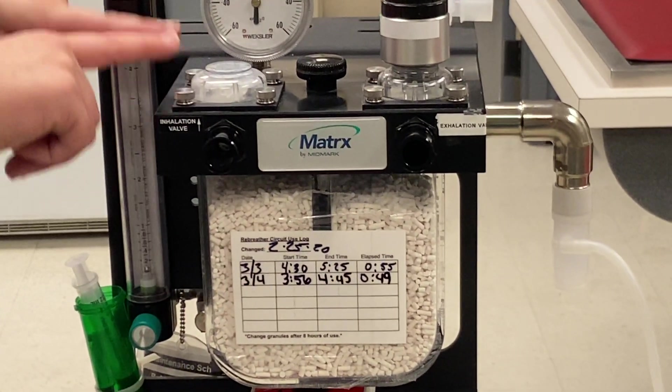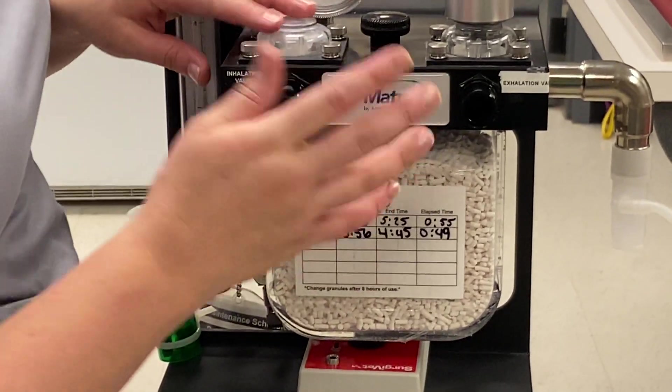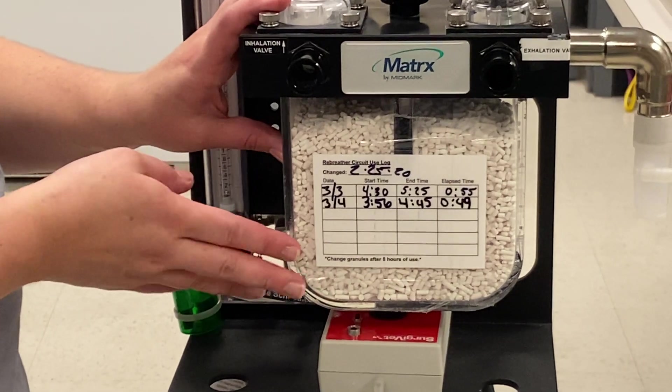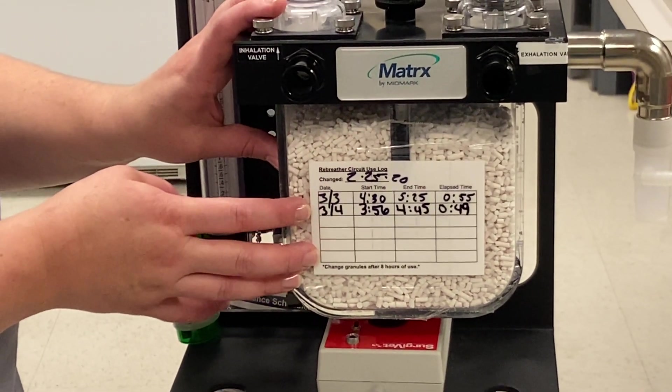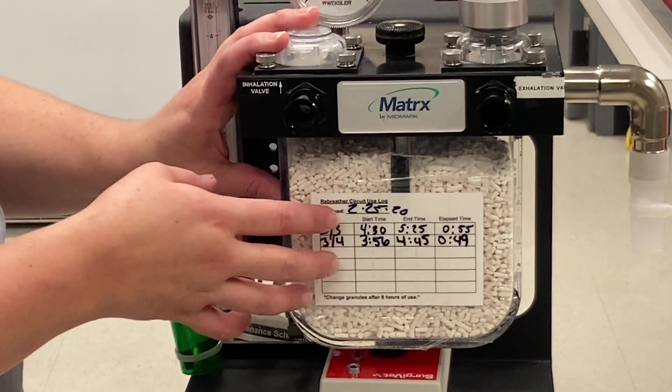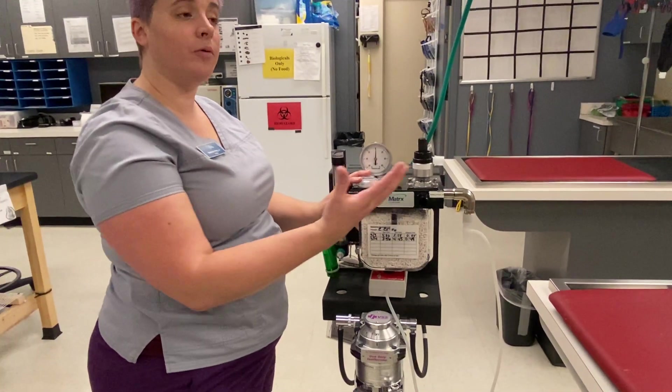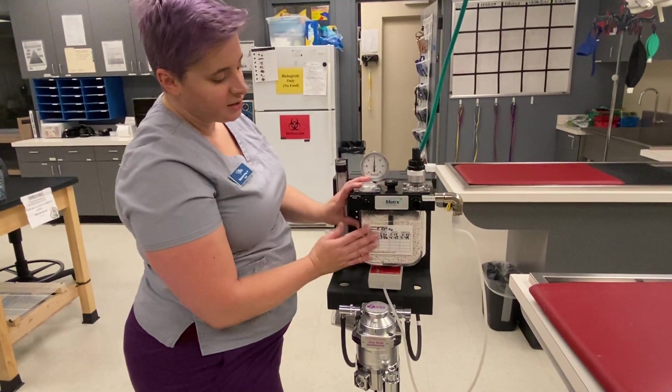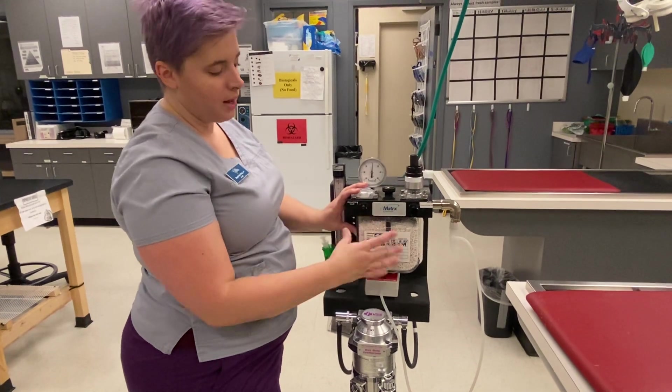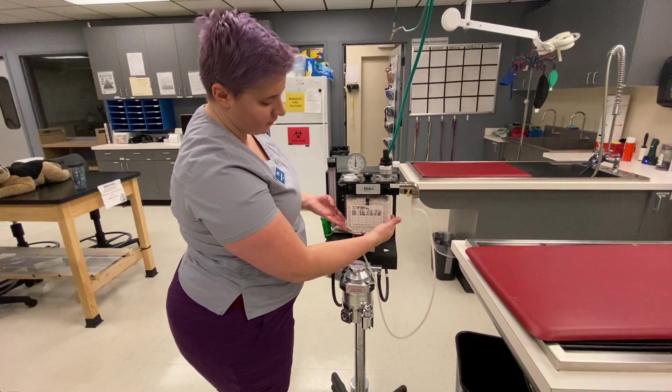And then this guy right here is my soda lime canister. So this is my CO2 absorbing. Again, it's for rebreathing circuits. So if they're rebreathing, that means we have to filter what they have exhaled. They're rebreathing back what they've exhaled. So we're going to, more gas and oxygen is going to mix with it, but we need to pull that carbon dioxide out. And that's what this container is here for.